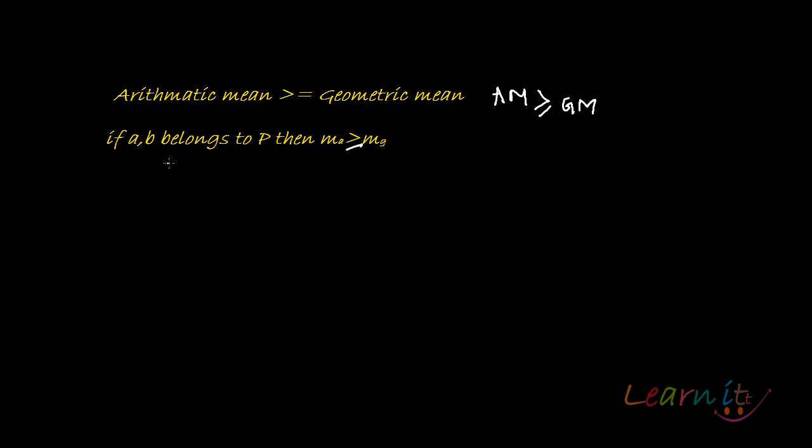So what do we need to prove? We need to prove that if a and b are positive real numbers, a and b belong to the positive real number set, then we need to prove that the arithmetic mean is greater than the geometric mean always.